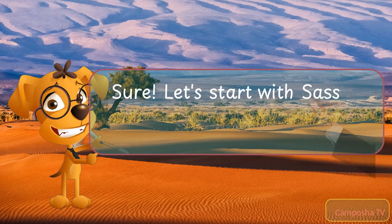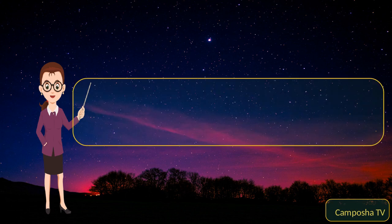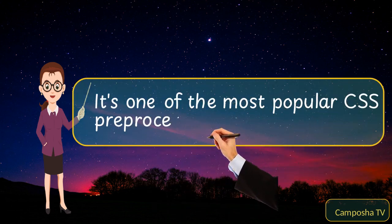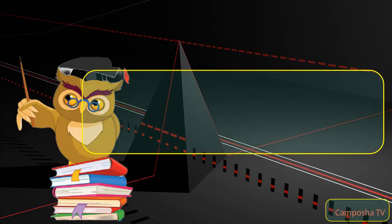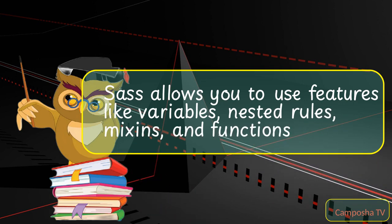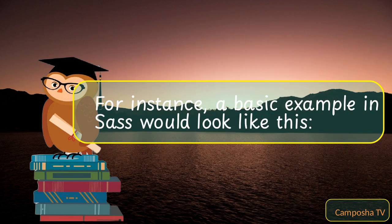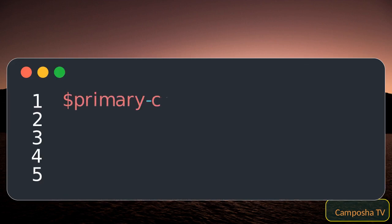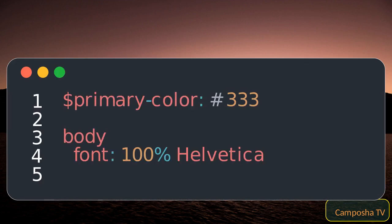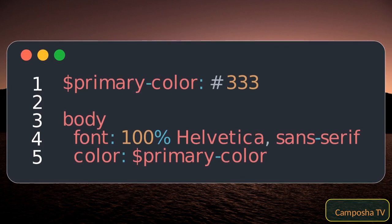Sure. Let's start with SASS, which stands for Syntactically Awesome Style Sheets. It's one of the most popular CSS preprocessors. SASS allows you to use features like variables, nested rules, mixins, and functions. For instance, a basic example in SASS would look like this. This code sets a variable for the primary color and applies it to the body's color. When compiled, it becomes regular CSS.